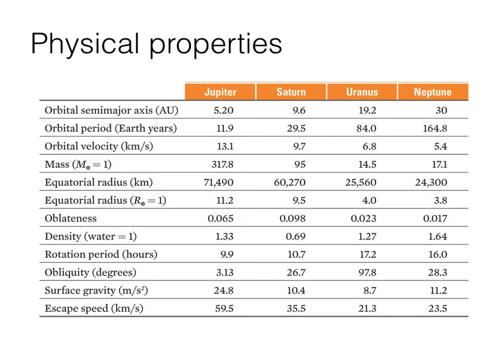Here is a quick wrap-up of all the physical properties — a convenient table for you to go back and reference. You don't have to memorize every single statistic, but it's really useful to look at when making comparisons and thinking about questions you might get asked. When we come back, we'll talk about the cloud structures of the giant planets.